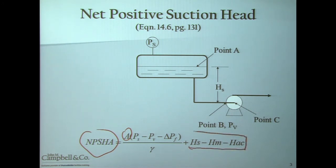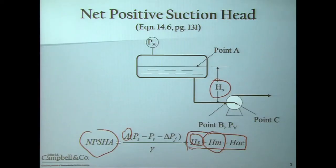To that, we add various factors. H sub S is the only positive term in this equation, which is the height of the liquid above the center point of the pump. We subtract a safety margin, and if you're dealing with a positive displacement pump, we also subtract an acceleration head factor. If you have a bubble point liquid, you'll be able to fairly quickly determine your net positive suction head available.